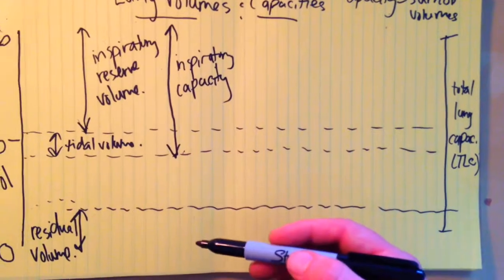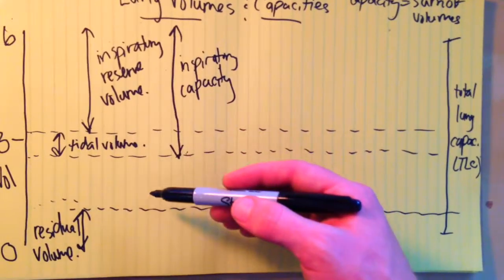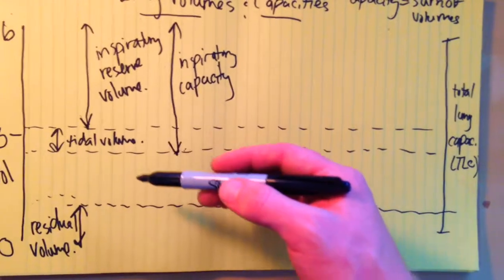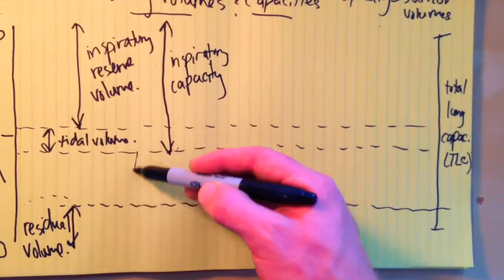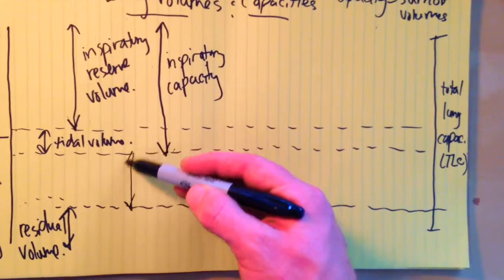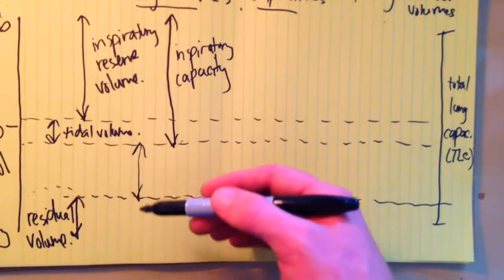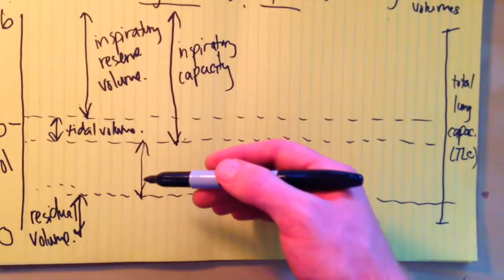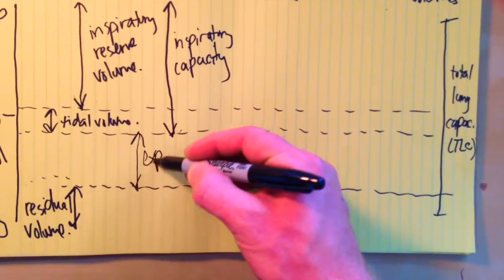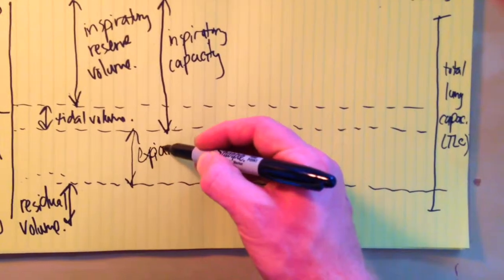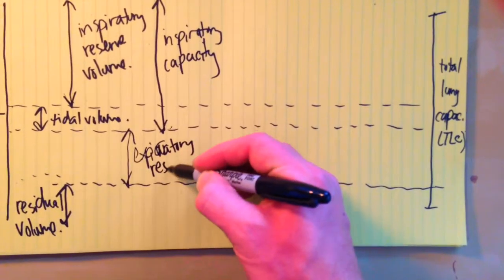Now what about on the flip side? So from the end of a passive expiration there's an amount of air or volume down to our residual volume. This is called our expiratory reserve. So if you were to expire as much as you could at the end of a tidal volume breath, then you'd get down to your residual volume. This is your expiratory reserve volume.